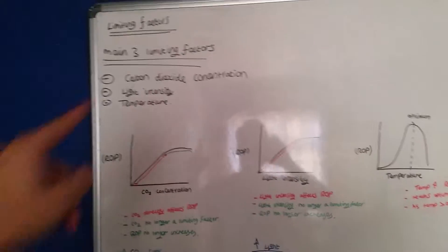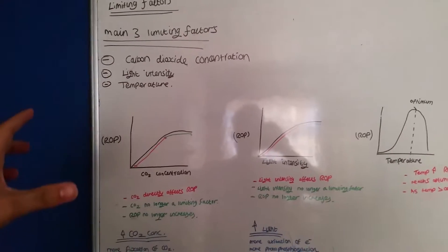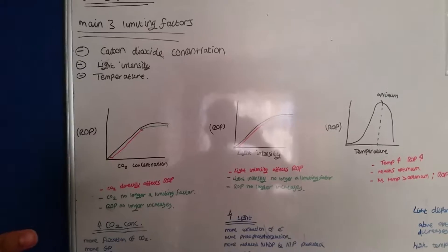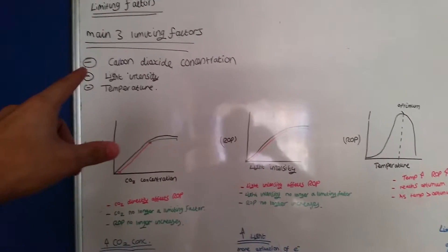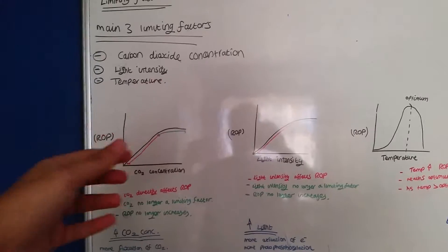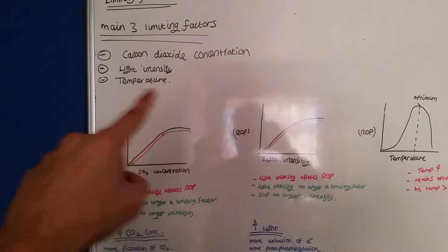Okay, so limiting factors pretty much affect the rate of photosynthesis. There are three main limiting factors: carbon dioxide concentration or CO2 concentration, light intensity, and temperature.